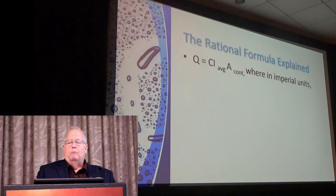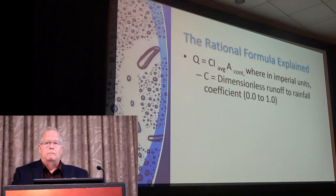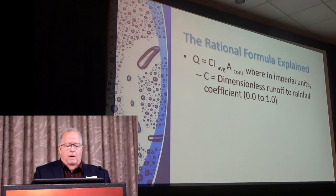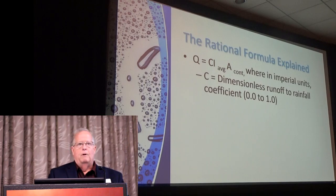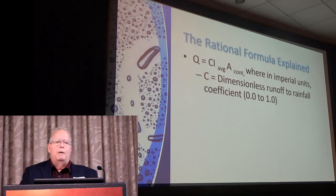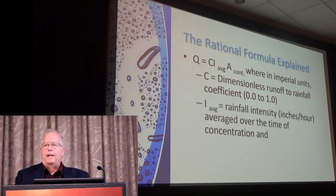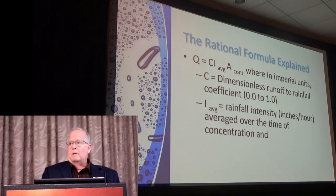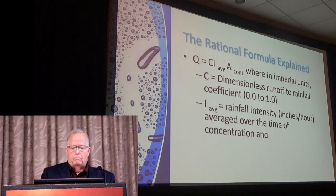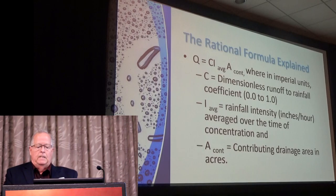In imperial units, Q equals CIA. C is the runoff coefficient and it goes from 0 to 1. In the last round of BMP standards, the traditional runoff coefficients for pavement and roof areas has gone from 0.95 to 0.99 — basically all runoff. I is the rainfall intensity, which is an average rainfall intensity over the entire watershed, averaged over the time of concentration. And A is just the drainage area in acres.